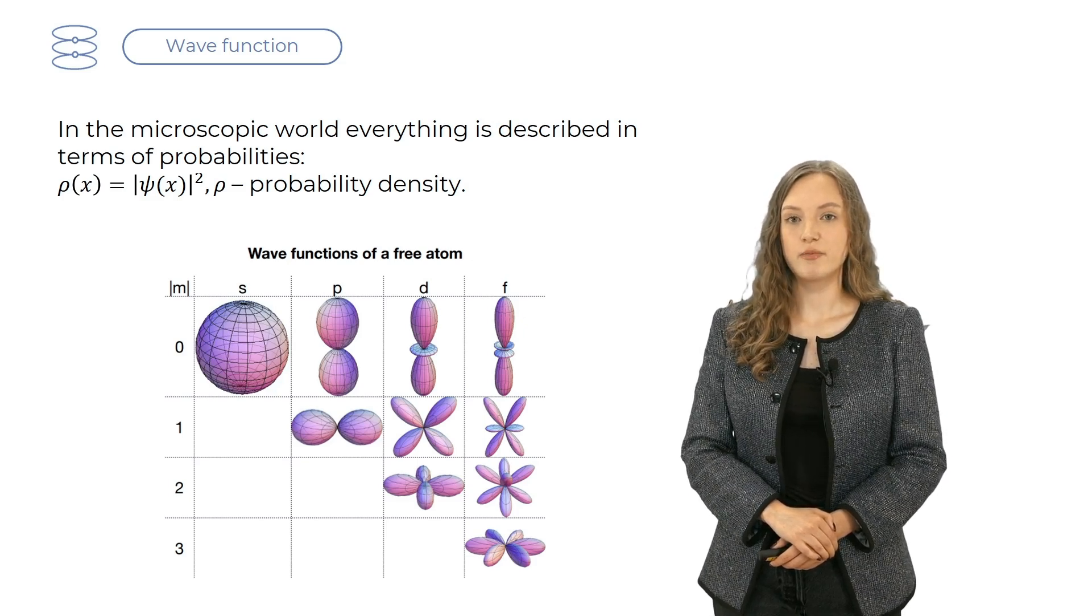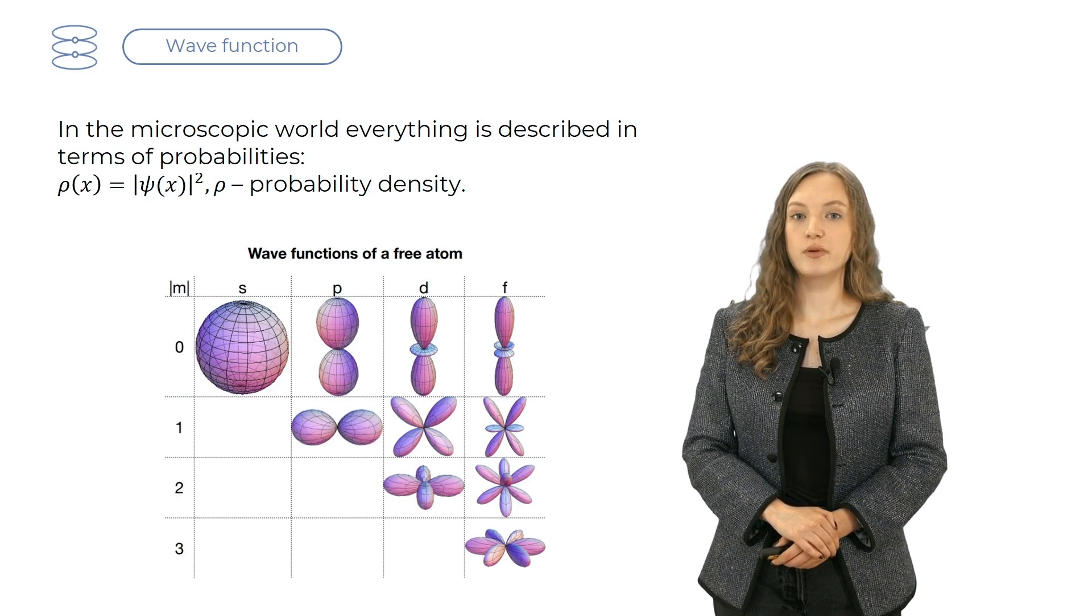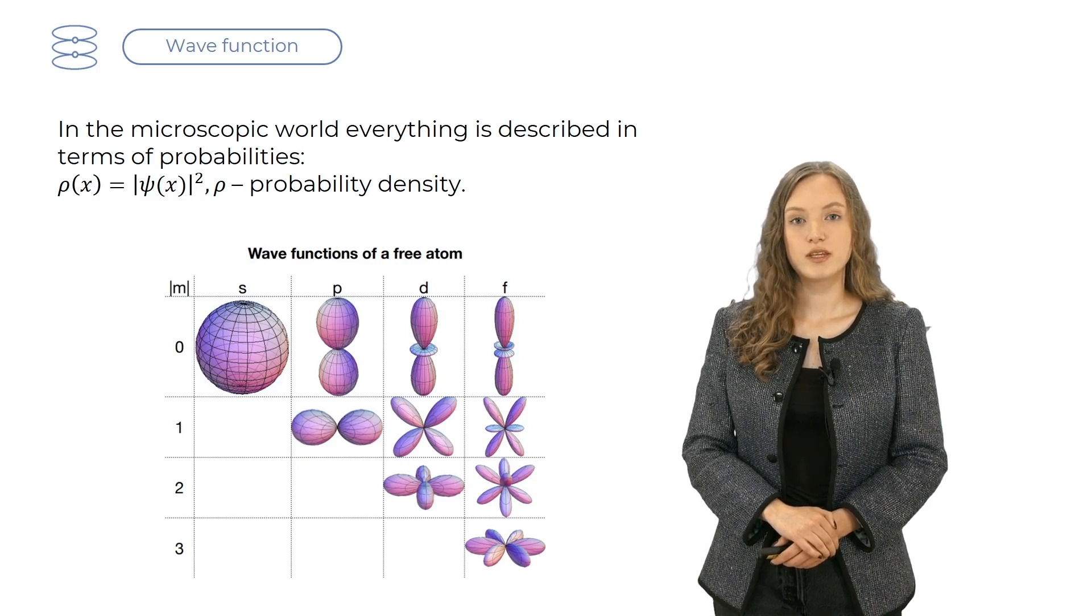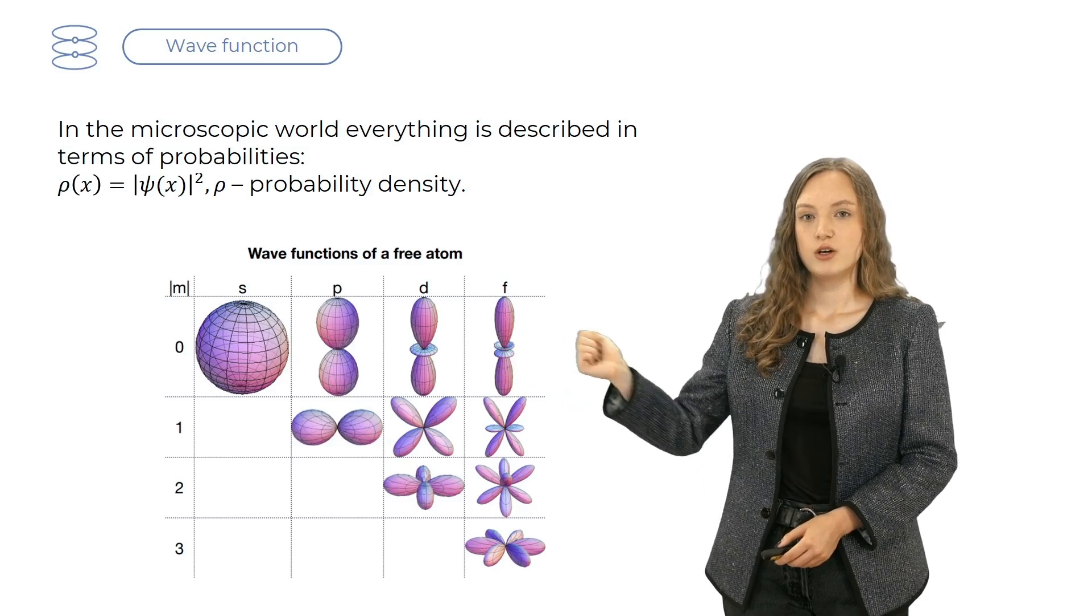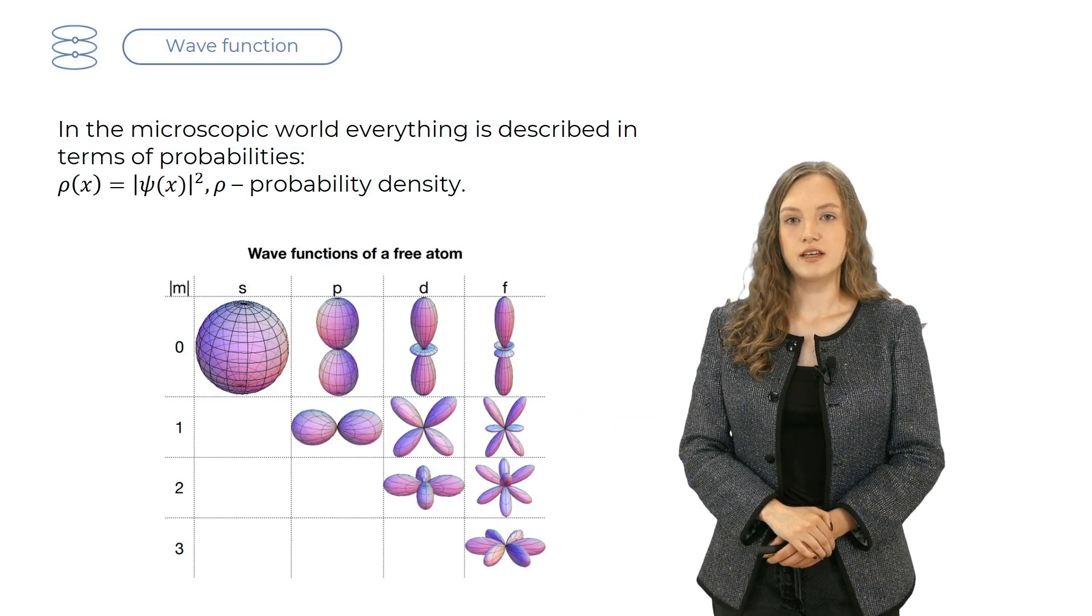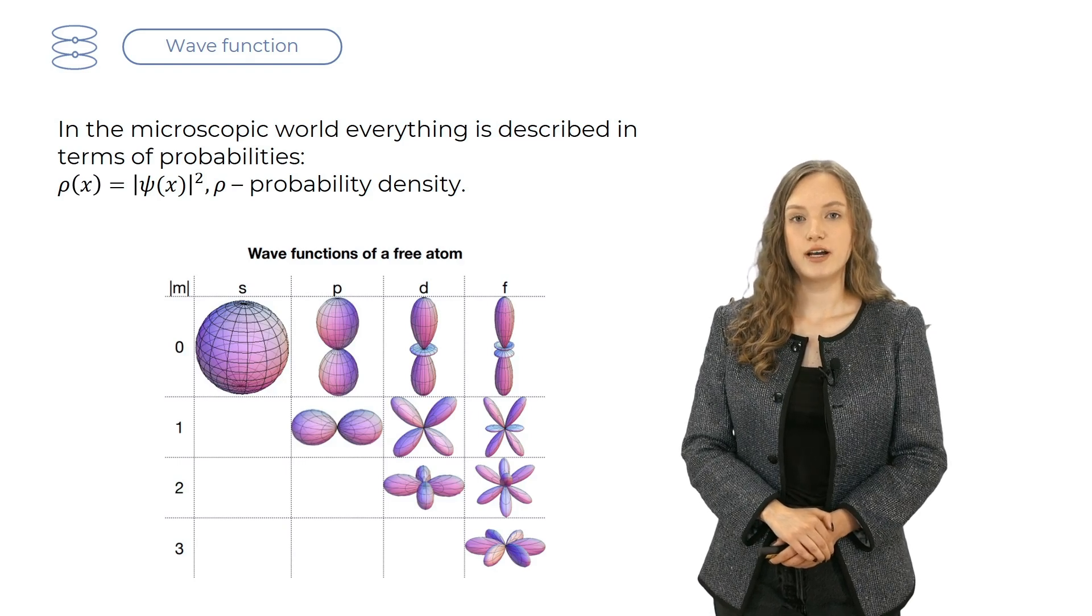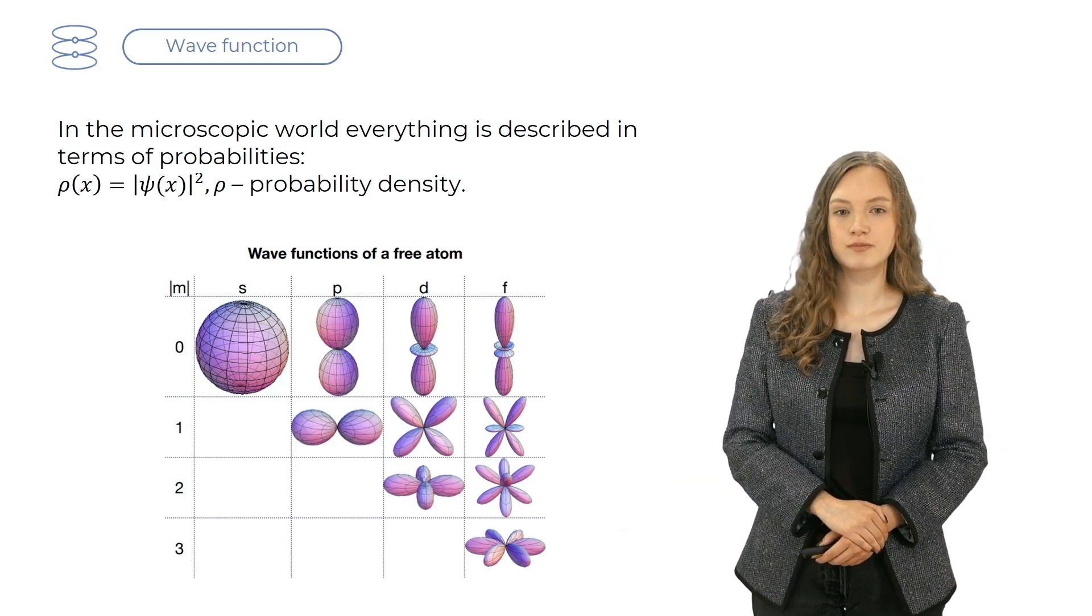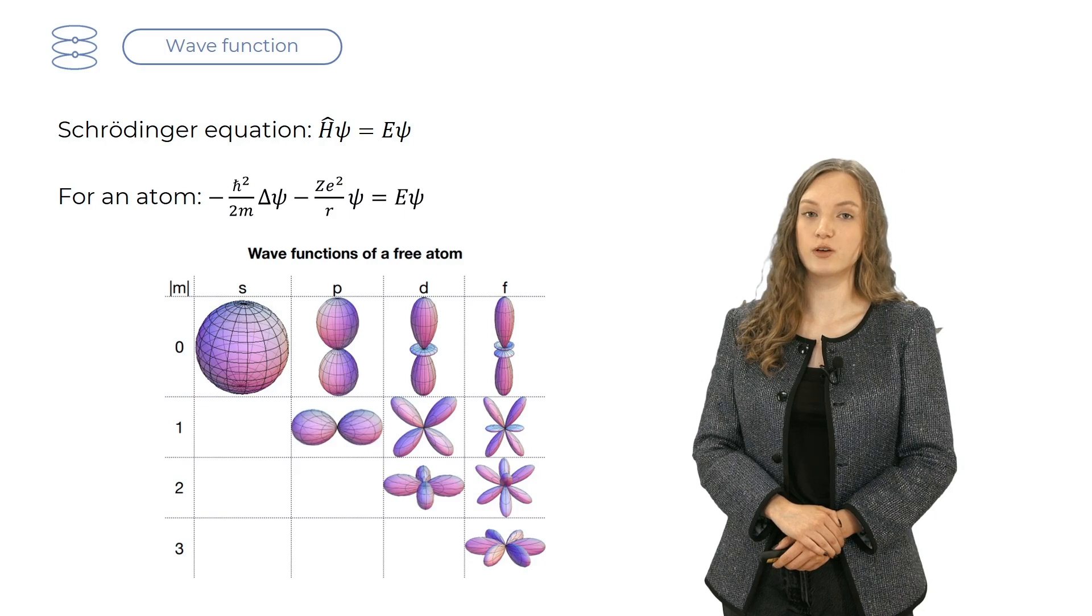Electrons in atoms occupy specific orbitals, and each orbital has a certain probability distribution of where the electron could be found. For the lowest orbital, we have a spherical distribution, hence the electron can be found anywhere within that sphere. For higher orbitals, we have more complex shapes, as you can see in the pictures. To obtain these wave functions, one has to solve a Schrödinger equation.